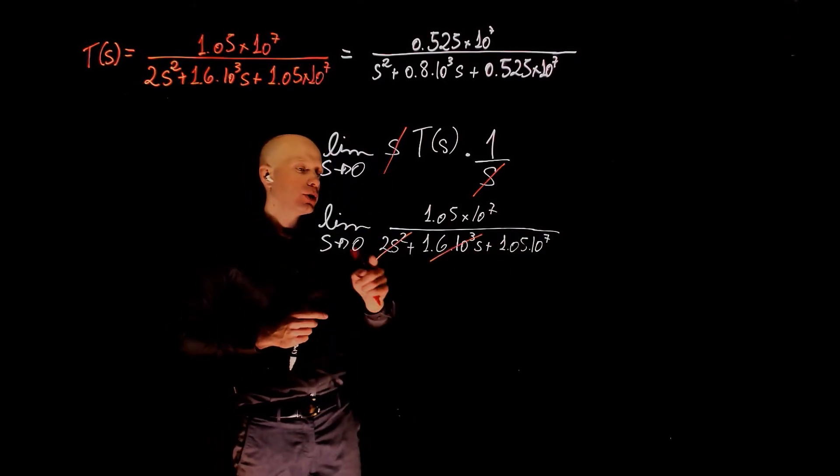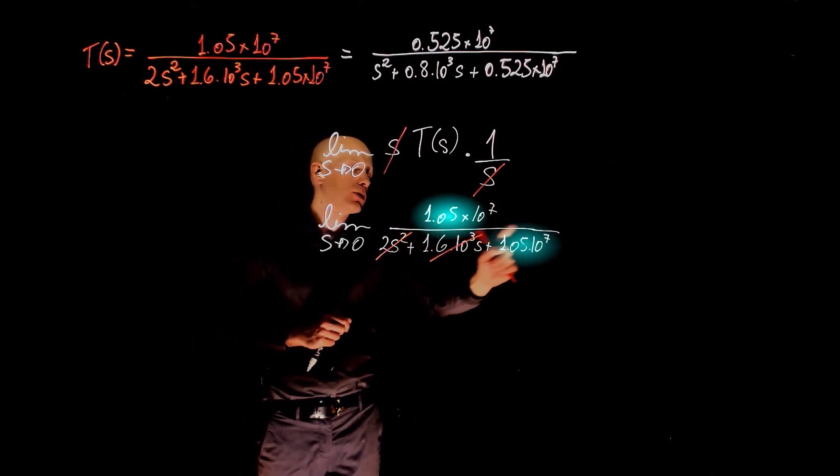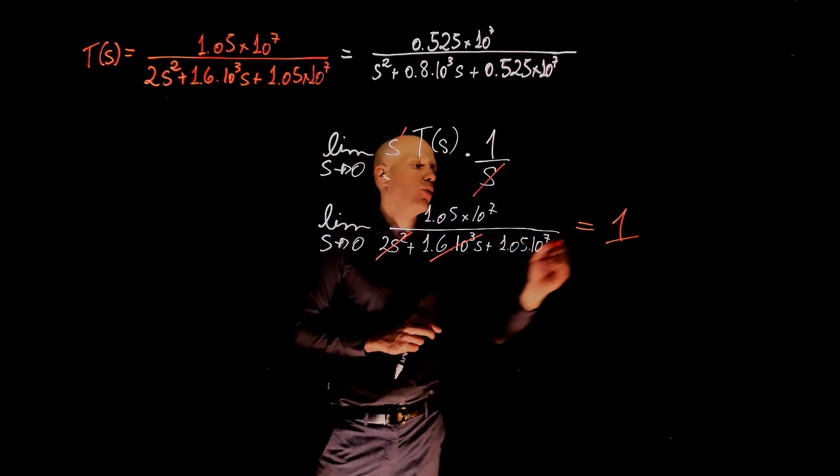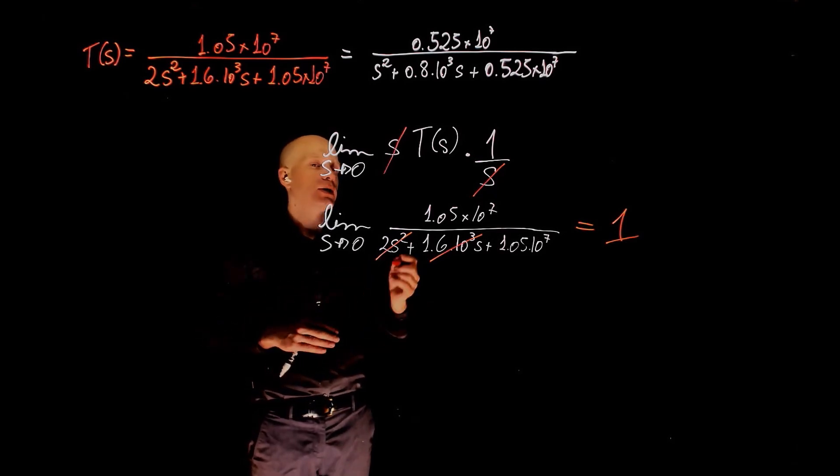When s tends to 0, all terms that have s now go to 0 and you are left with these two terms, which are the same. So the division here is equal to 1. And this is the final value of the transfer function when step input is applied.